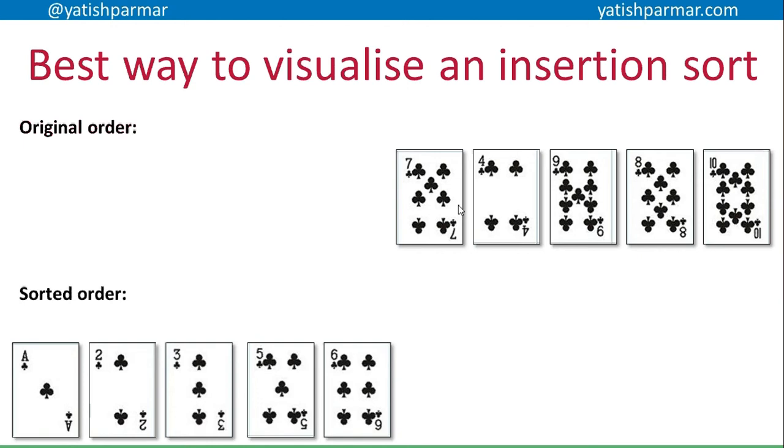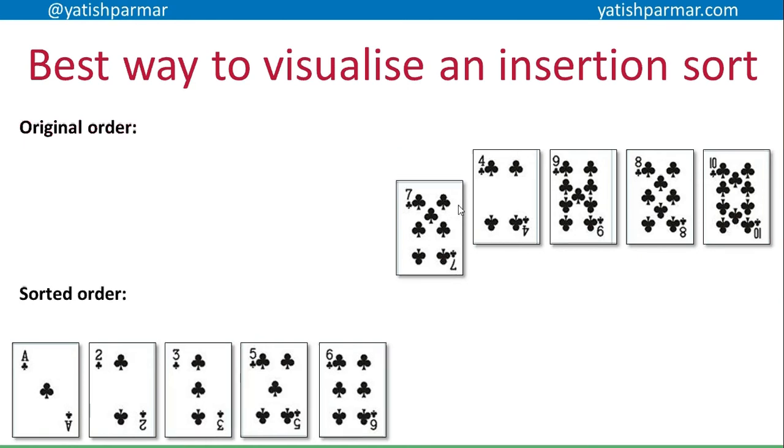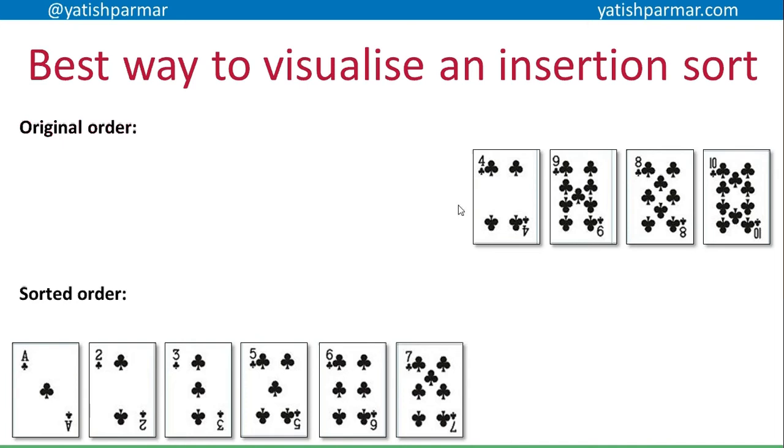Then I can copy over my seven because that seven is obviously larger than the six. And I want to copy over the four and I realize I've got a problem.